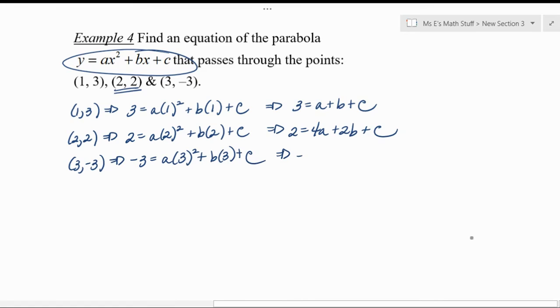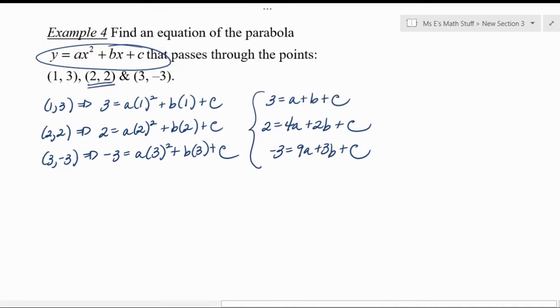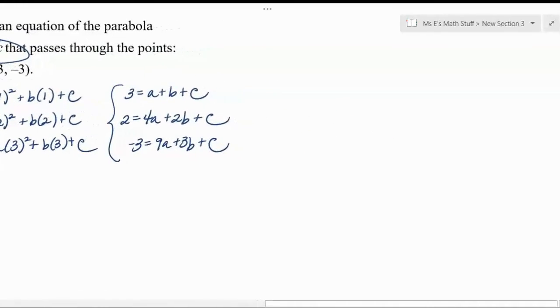And then we'd end up with negative 3 equals 9a plus 3b plus c. Well looky there, I have a system of equations in three variables, and so now I just need to know how to solve it. So I'm going to assess the situation. I'm going to eliminate either a's, b's, or c's, knowing I have to do it twice, and I'm definitely going to go for eliminating c's.